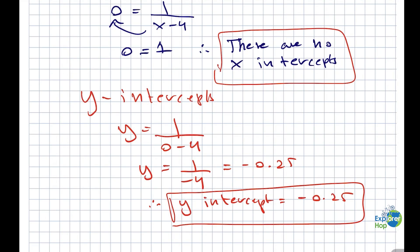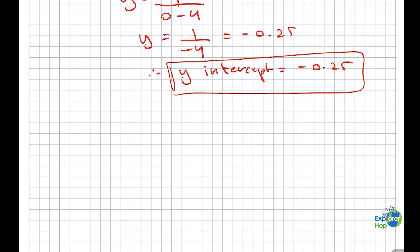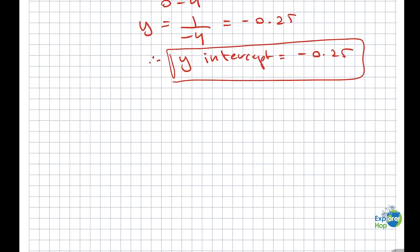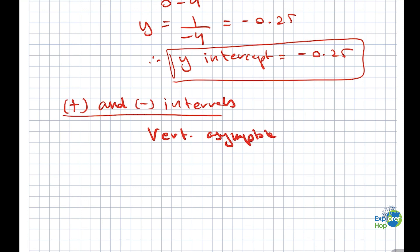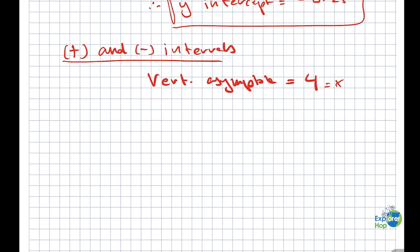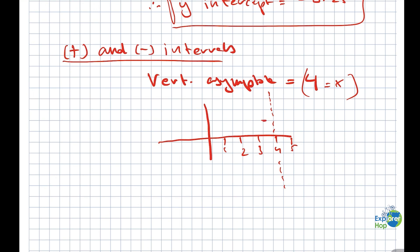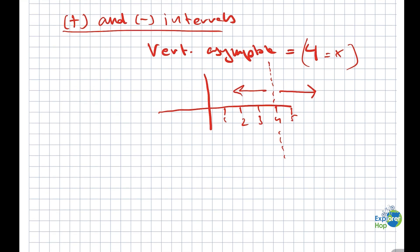Now that we have that, we can also find the positive and negative intervals of the function. To find these, we look at the behavior of the function before and after the vertical asymptote. We know that the vertical asymptote is x equals 4. If you draw the graph, we can plug in a number smaller than 4 and a number greater than 4 into our function f of x equals 1 over x minus 4.